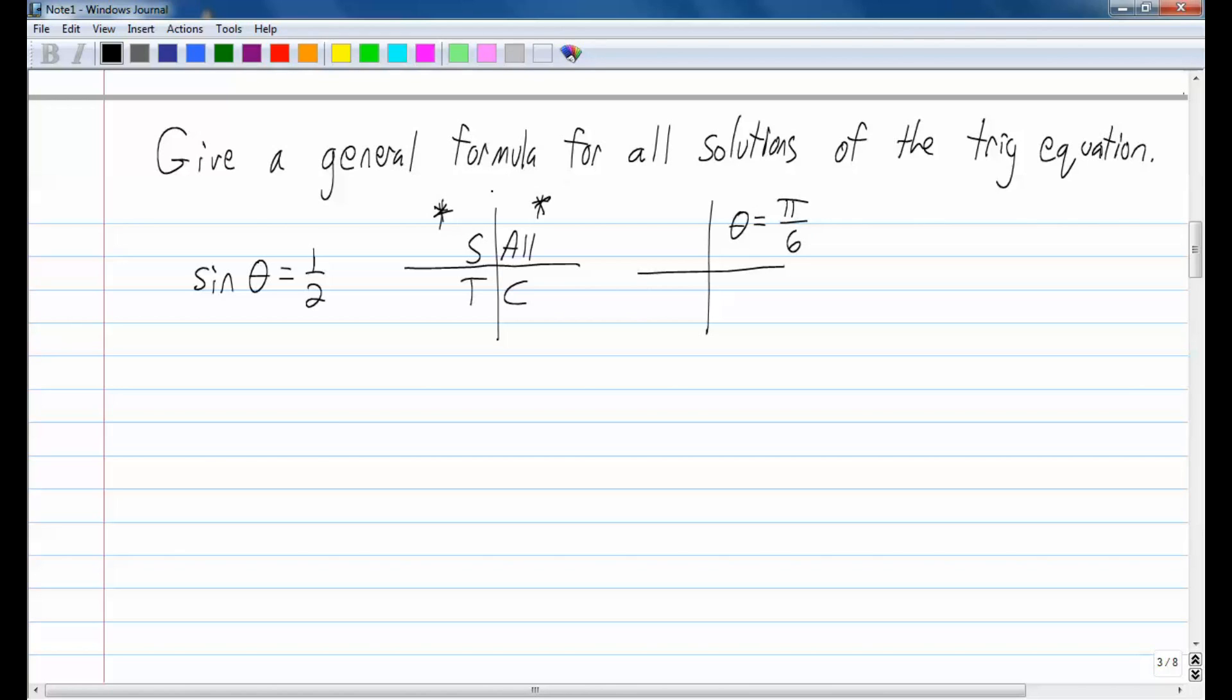Now, if I want the angle measure in the second quadrant, I use the formula pi minus theta. So pi minus pi over 6. I'd have to get a common denominator.